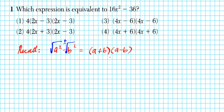Let's go ahead and factor it out completely so you can see with certainty that the answer is option 2. We have 16x squared minus 36. First, ask yourself: is there a greatest common factor I can pull out? If it's not obvious, you can decompose 16 and 36 completely.